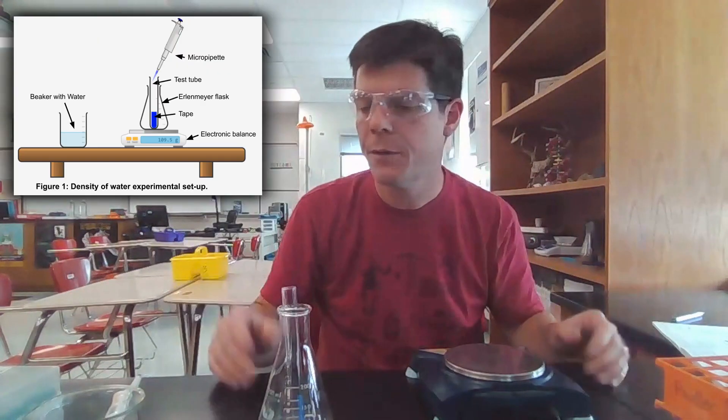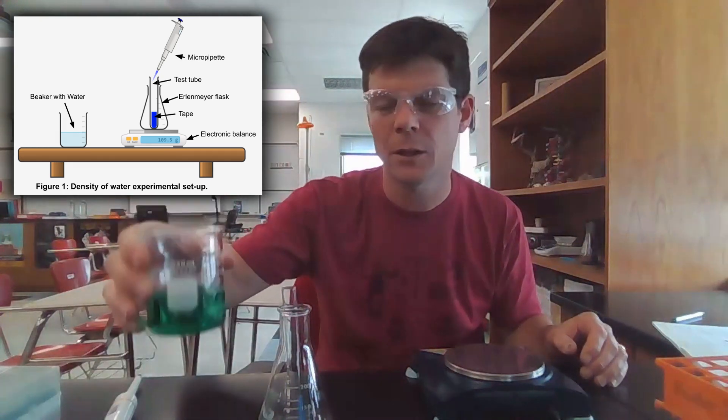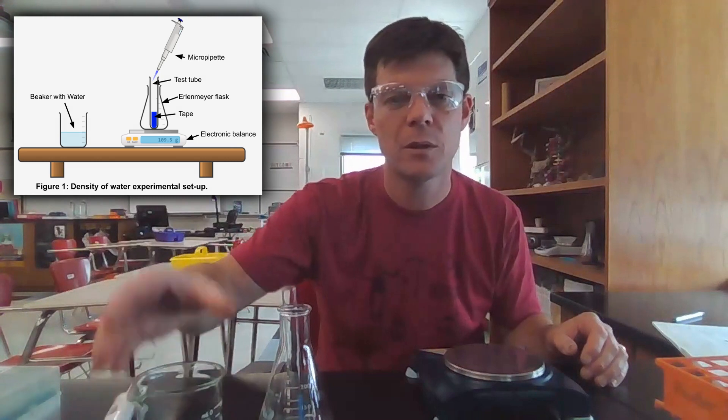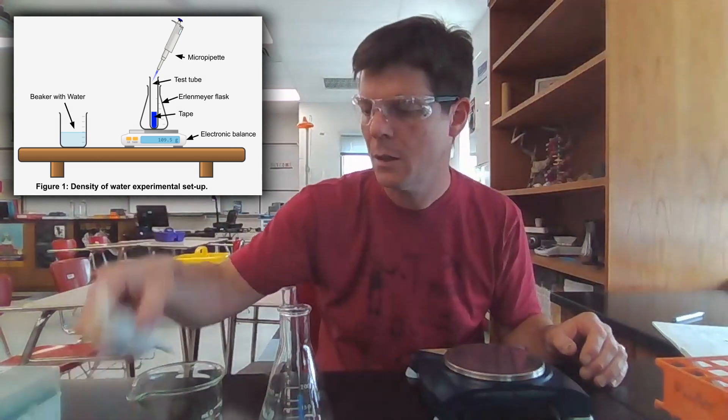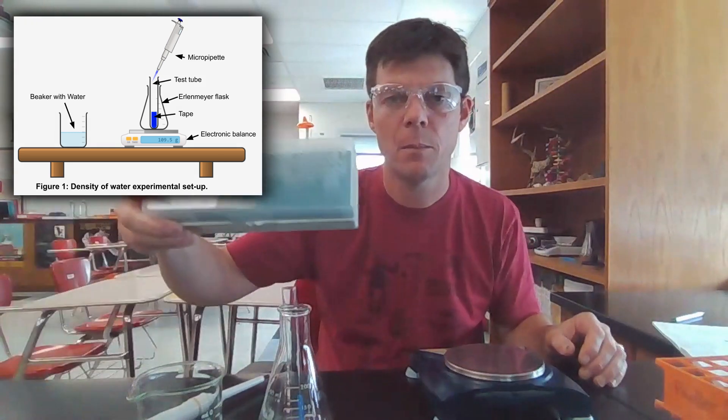You'll notice that I've added a piece of tape. We will be creating a graduated test tube. Other things that we're using for the experiment: I have a beaker with water. I've added a little bit of food coloring to it just to make things easier to see. I'll be using a micropipette, and then I have pipette tips.